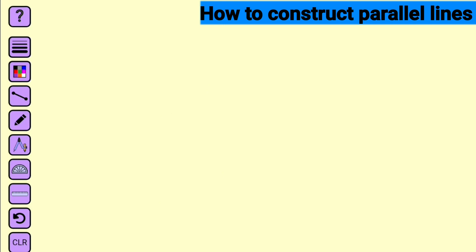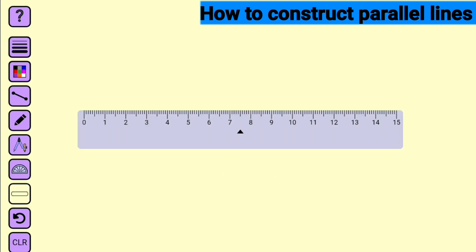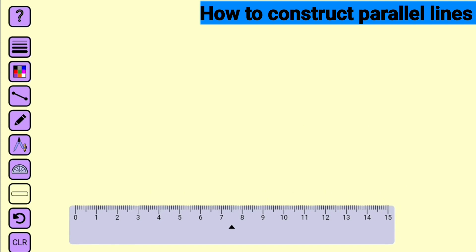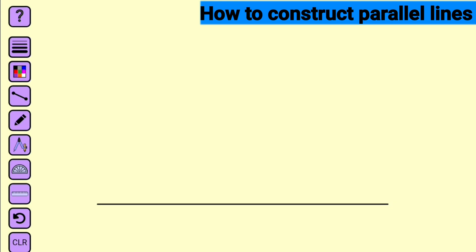Let me start by presenting to you how to construct parallel lines. Bring out your ruler and draw a convenience length. This is a straight line. We want to draw another line that is going to be parallel to this one. Let us call this line A.